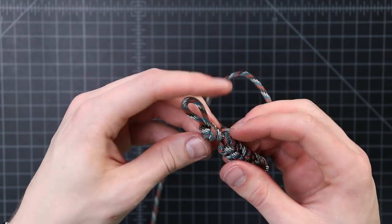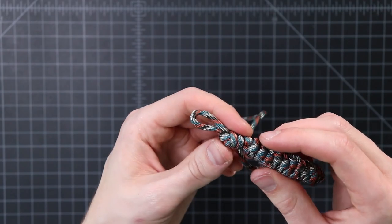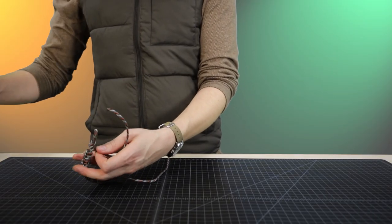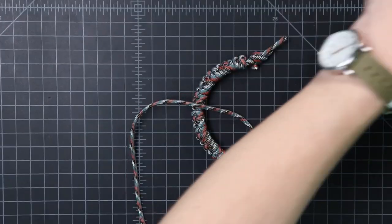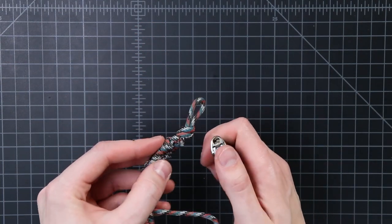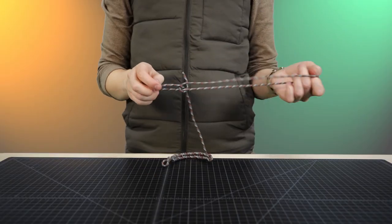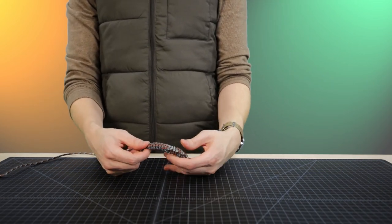You can use a decorative knot here if you like, but I'm just going to leave that overhand knot. Alright, so now we'll again clip off our couple inches of cord here.